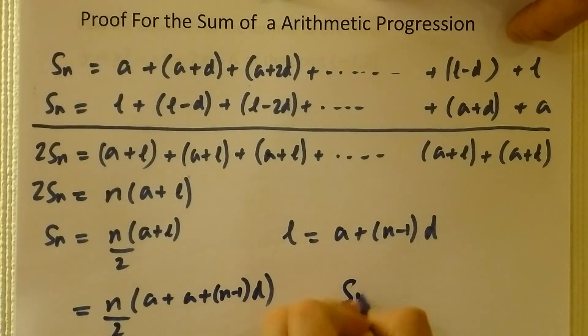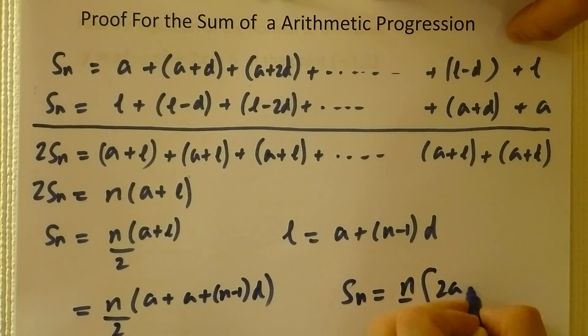I get this sum as n over 2, times 2a plus n minus 1 lots of d.